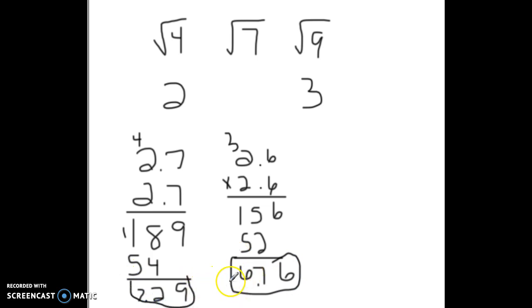Which of these two is closer to 7? Well, just by a little bit, 2.6 is closer to 7. So I'm going to estimate that to the nearest tenth, the square root of 7 is 2.6.